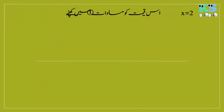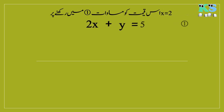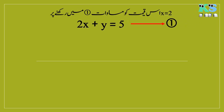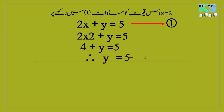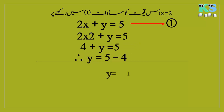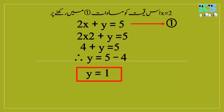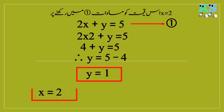X equal to 2 کی قیمت Equation No.1 میں رکھنے پر: 2X plus Y equal to 5۔ X کی قیمت رکھنے پر 4 plus Y equal to 5۔ 4 equal کے ادھر جا کر minus میں تبدیل ہوگا، Y equal to 5 minus 4، Y equal to 1۔ تو X کی قیمت 2 اور Y کی قیمت 1 حاصل ہوئی۔